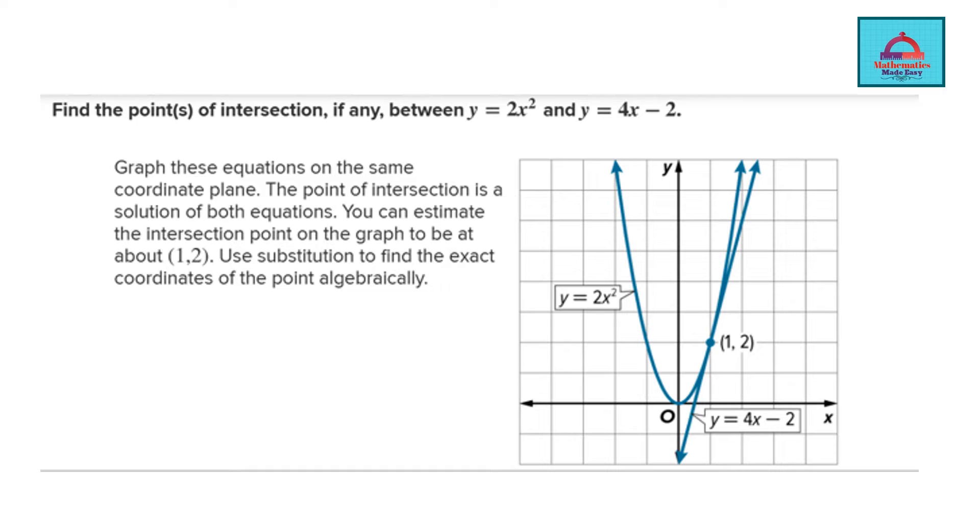This is the first question we'll be looking at. Here you need to find the point of intersection between the quadratic functions. As you can see, this is the quadratic function: y equals 2x squared. Because the maximum power is 2, this is a quadratic function.